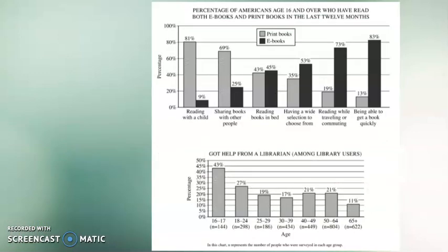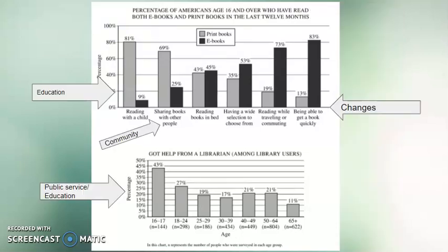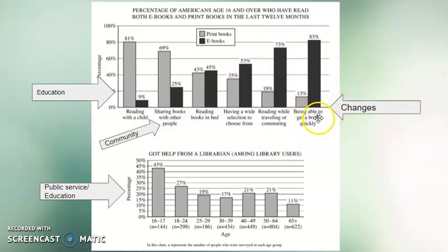And then I have my chart — how does this relate to the ideas I already pulled out of the prompt? I have education: reading with a child, building literacy. I have community: sharing books with the people. I have changes: these are changes that technology has brought us — whereas usually if you wanted to get a book you had to go through the library or a bookstore, now you have the option of doing it more quickly with an e-book. And I have the idea of public service, that this is providing help to people, and also education — the youth who are still in high school are more likely to use that service than others.